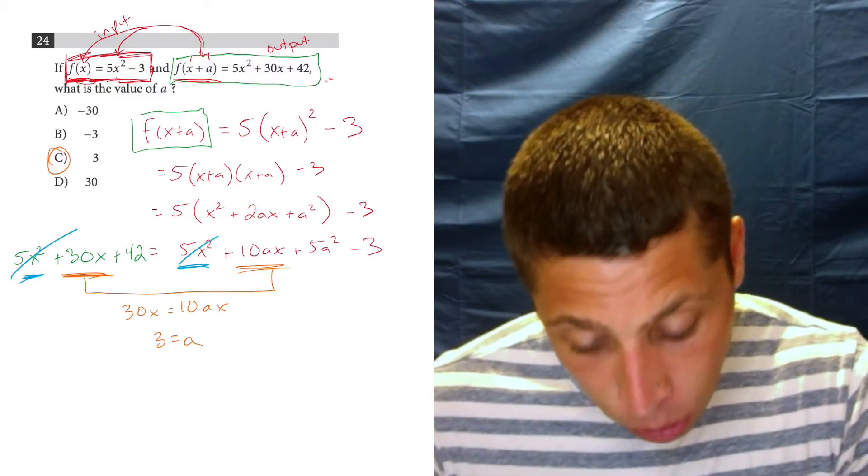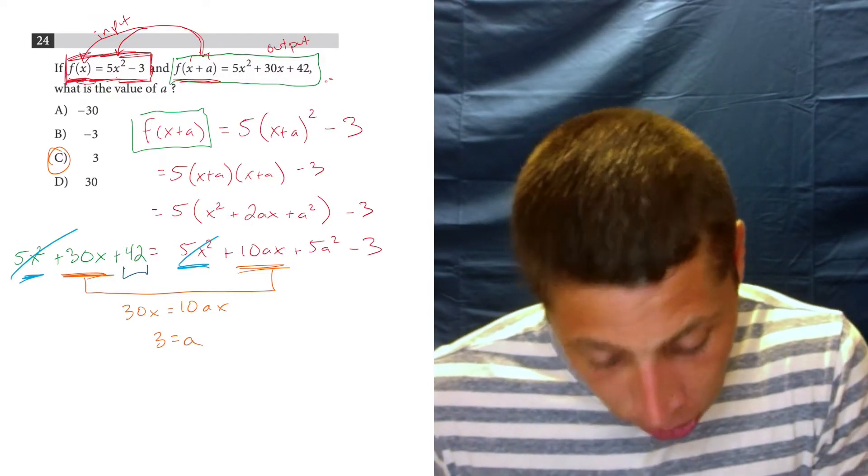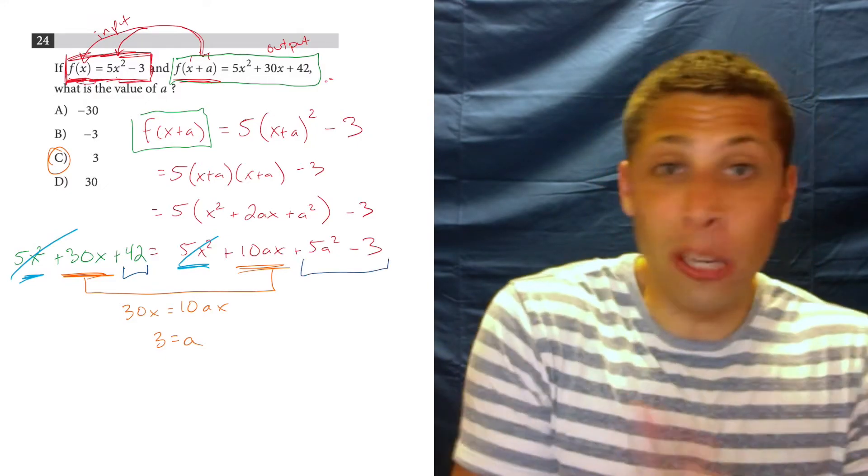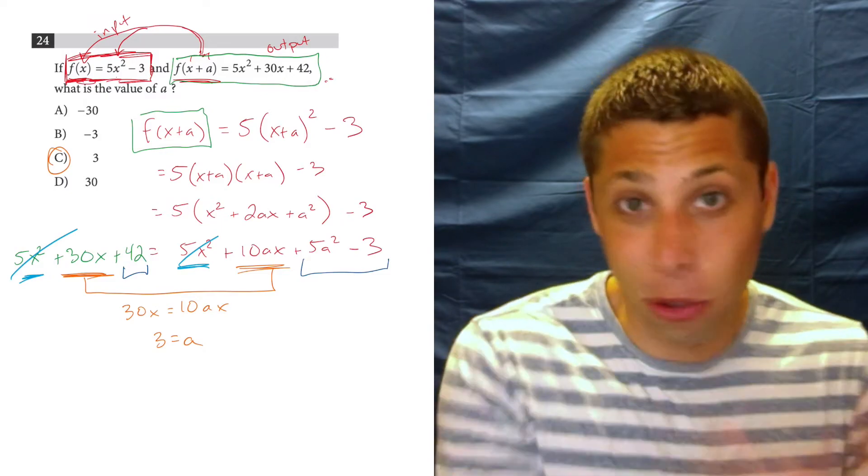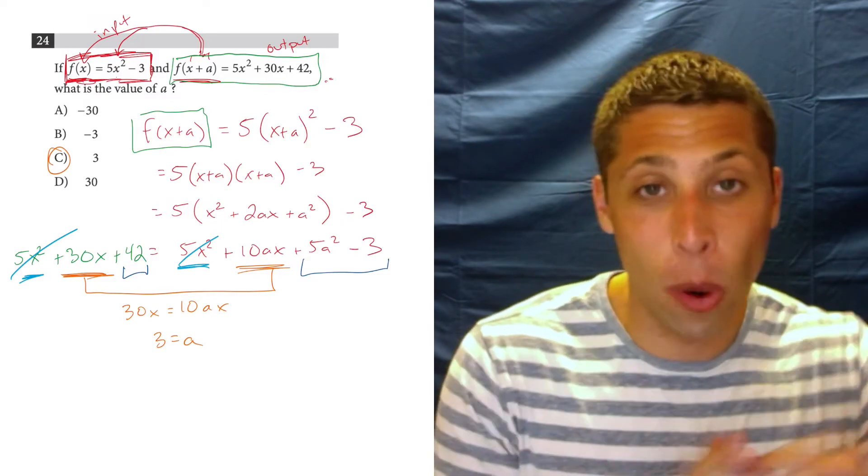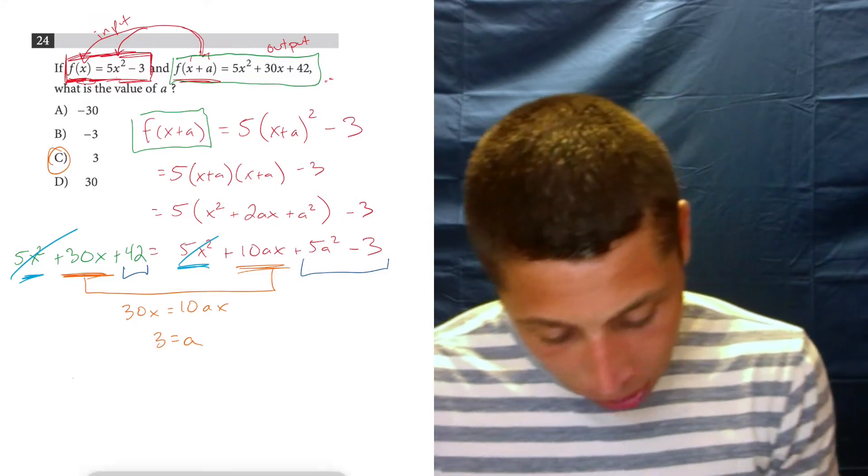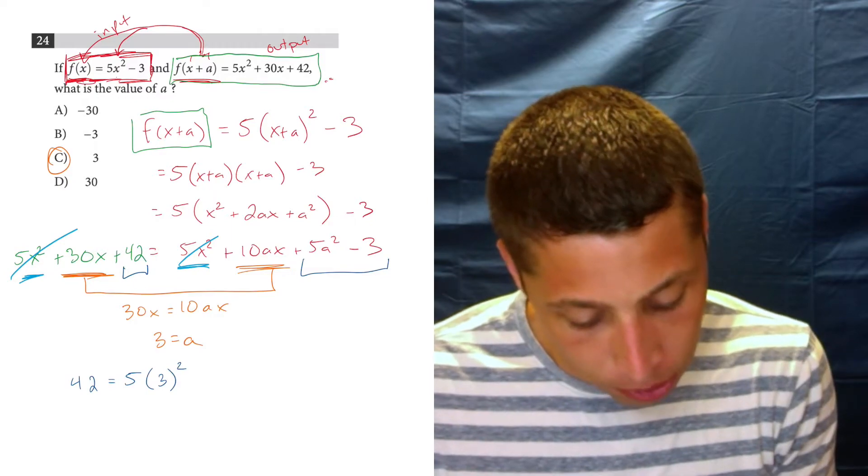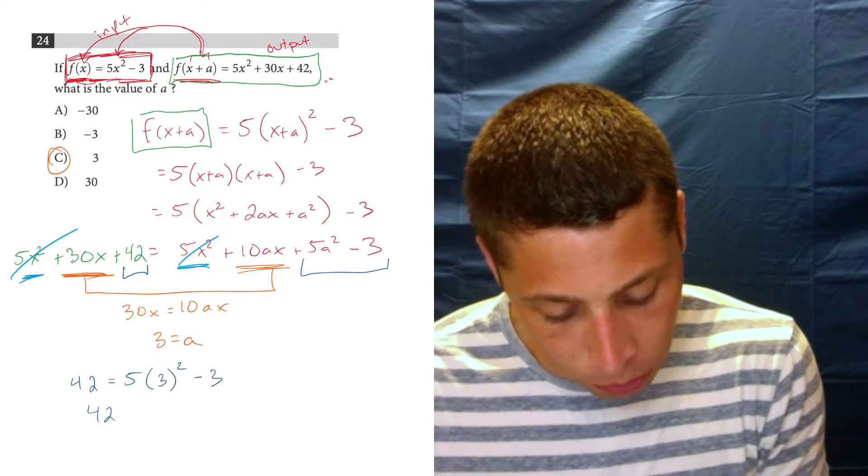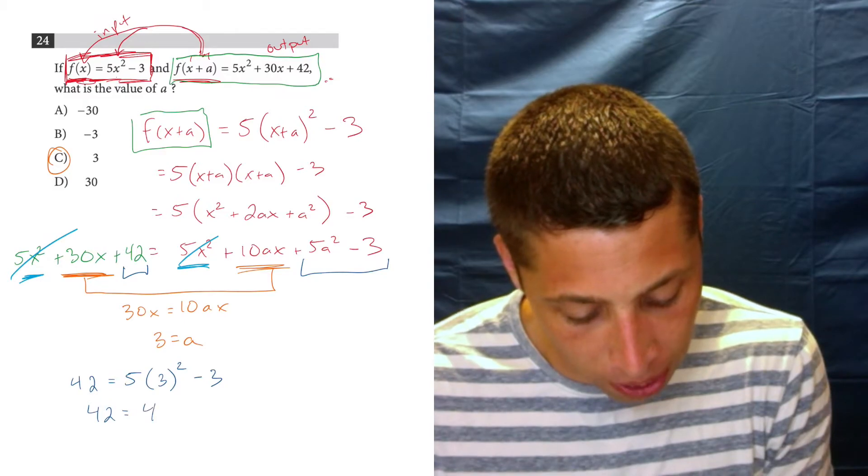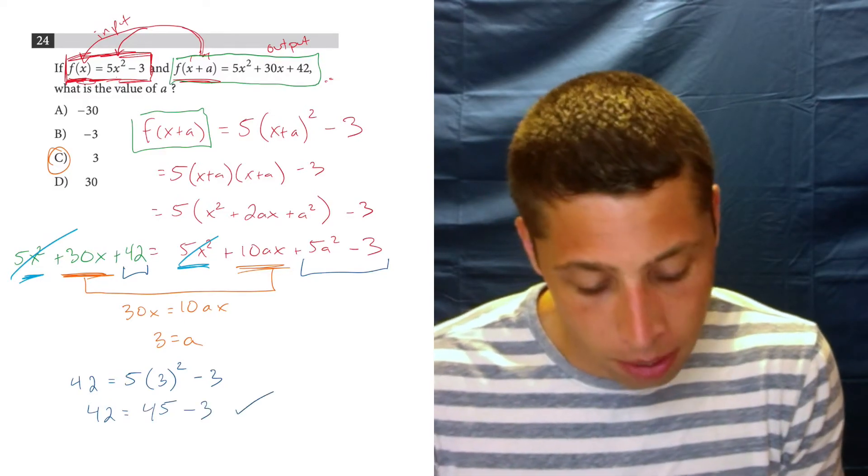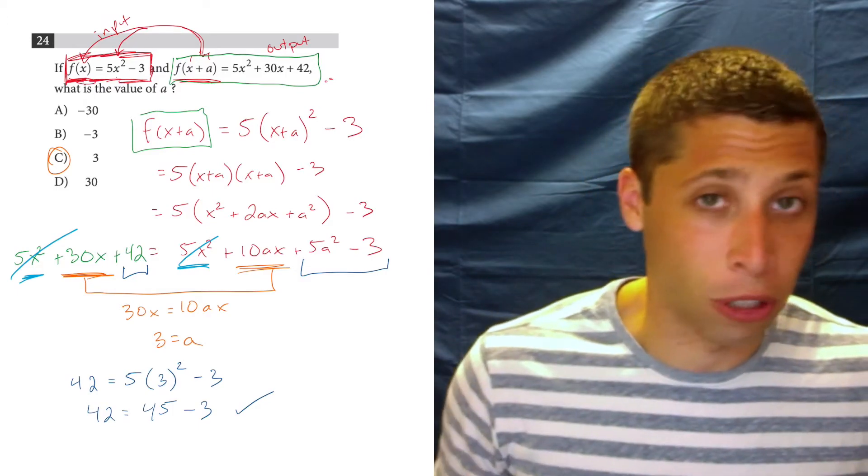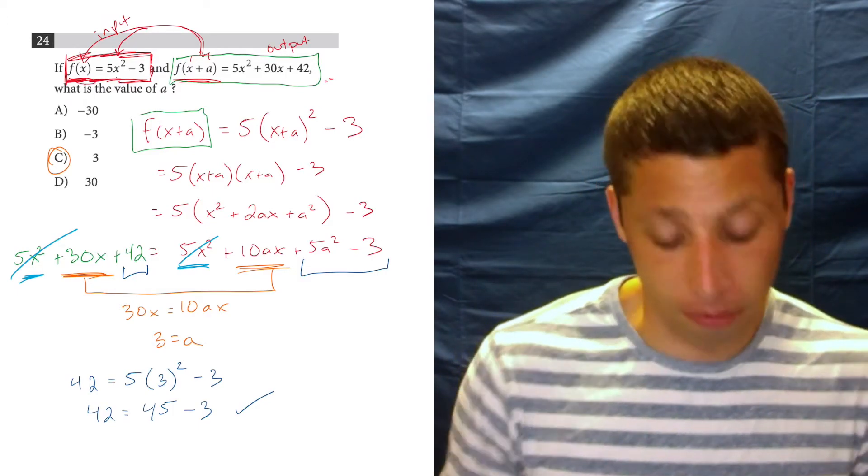And we can confirm that because we also know that 42, the one term without an x, is also supposed to be equal to these other terms that don't have an x. It's two terms because there's an a, but it's still no x's. So we can make another equation. 42 is equal to 5, we know a, let's put that in now, 3² - 3. So 42 is in fact equal to 3² is 9 times 5 is 45 minus 3. So it checks out. And we could have gone directly to that equation first if we wanted and ignored the x's, but same result.